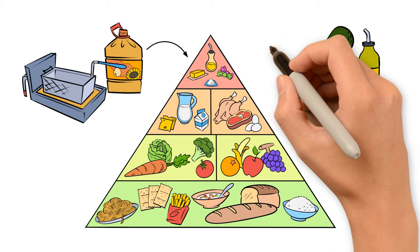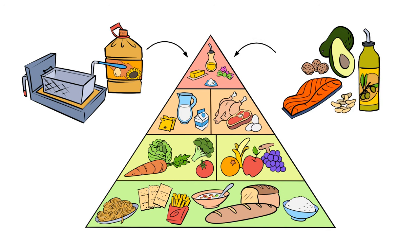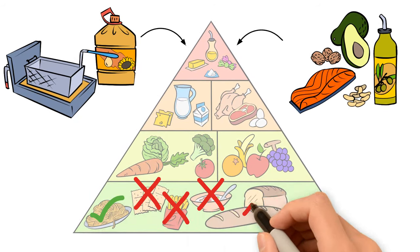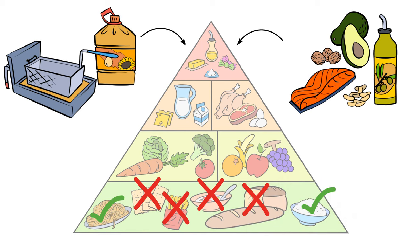Instead of advising people to substitute healthy unsaturated fats for unhealthy trans fats, the pyramid, published in 1992, grouped all fats together at the top as foods to avoid. The base of the pyramid, representing the largest portion of a healthy diet, was reserved for carb-heavy grains. As with fats, the food pyramid made no distinction between different types of carbohydrates, some of which are healthier than others.